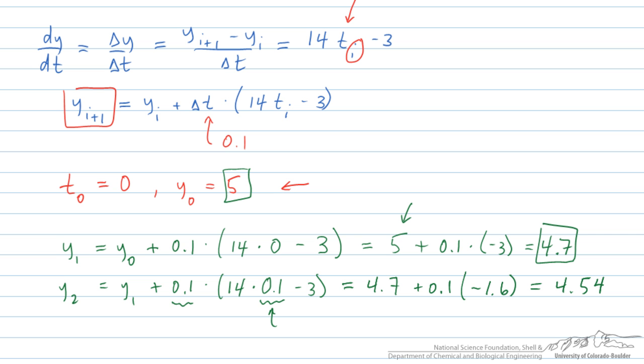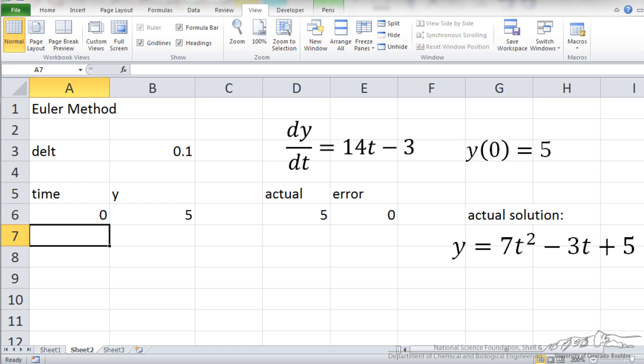And obviously when we decrease our time step, this becomes more accurate; it does consequently lead to more computing time. I have got this set up in Excel. I have got my Δt, I have got my formula, I have got an initial condition.